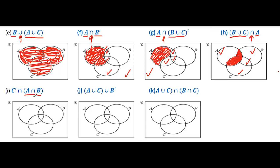Now we identify A intersection B — the common region between A and B. These two regions represent A intersection B. Now identify C complement, which means outside of C. These regions are outside of C. There is intersection between them, so we shade the double tick area. This is the only area with double ticks — this is the final shaded region.